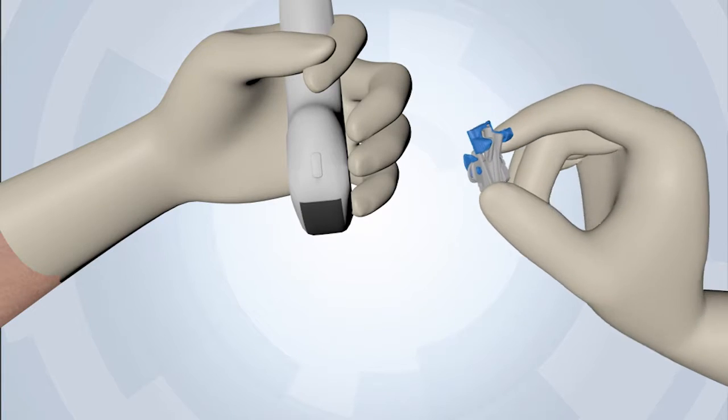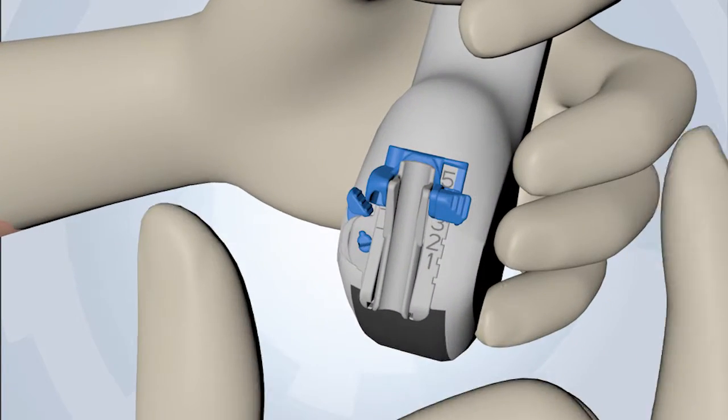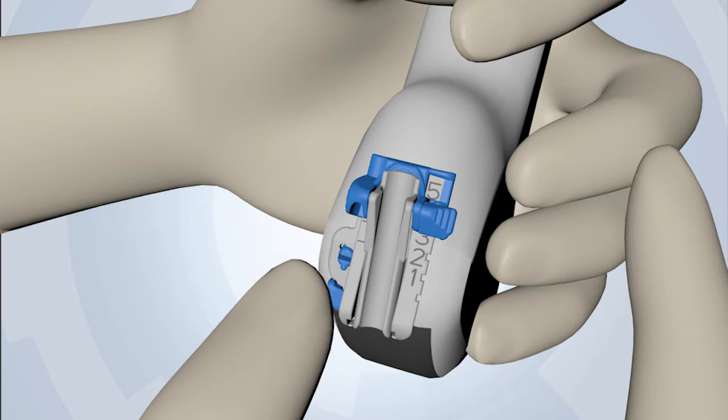Versa is aligned and placed over the VersaLink locating feature on the transducer. The guide is then locked into place.